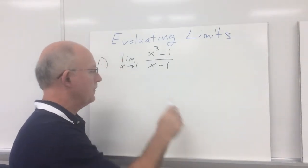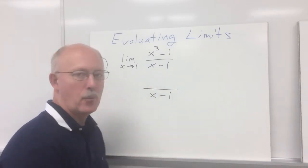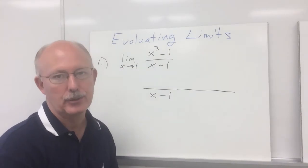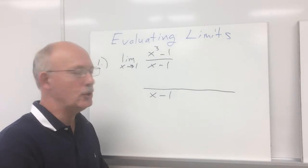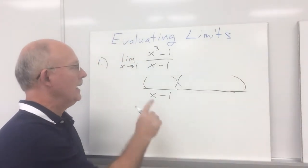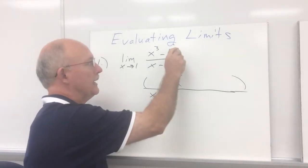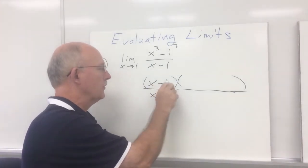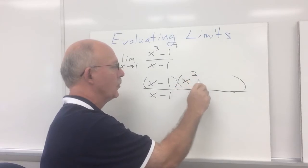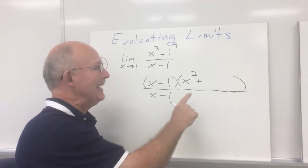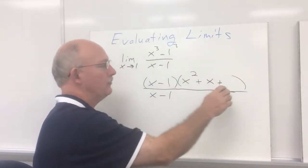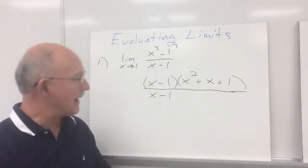To remove the hole, we have to factor our expression. We've got x cubed minus one over x minus one. Now, x minus one won't factor — it's just a binomial. But x cubed minus one will factor. In the previous video, we reviewed how to factor a difference of two cubes. A difference of two cubes factors as a binomial times a trinomial. The two bases are x and one, so the binomial factor is x minus one. The trinomial's first term is x squared, the middle term is plus x, and the last term is one squared, which is one.